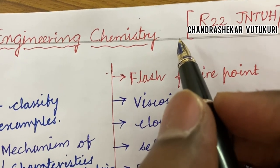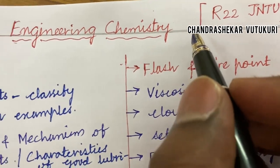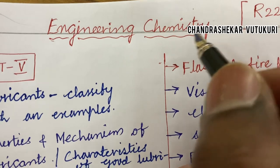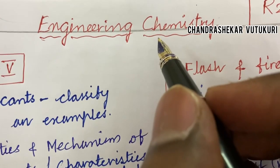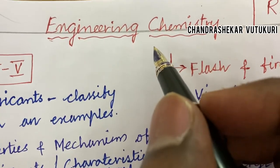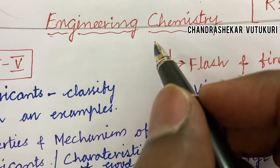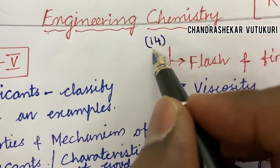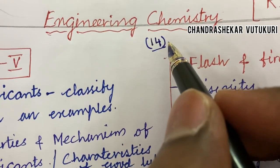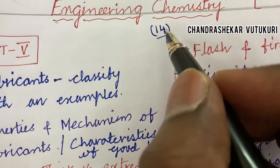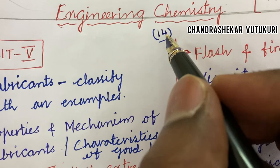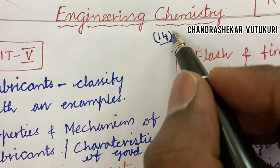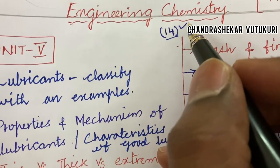Dear students, as per the R22 regulation, the QP pattern is BEP. The marking for the external examination is 60, and you are eligible to take the external exam if and only if you score 14 marks in the average of MIT 1 and MIT 2. A video is posted in my channel — please go through it and watch for the marking of R22 regulation.